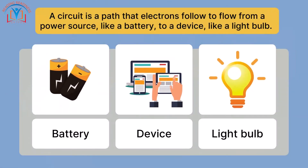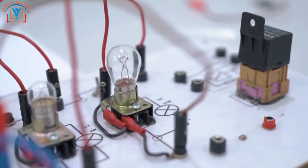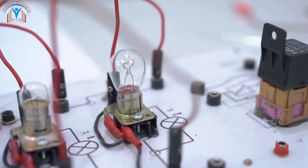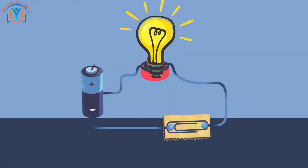A circuit is a path that electrons follow to flow from a power source, like a battery, to a device, like a light bulb. When the circuit is complete, the electrons flow through the wire and make the light bulb turn on.